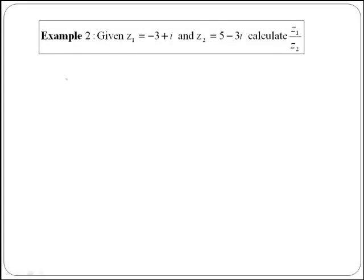Now that we know about the conjugate of a complex number, we are ready to solve the question that we had at the start. Given z1 equals minus 3 plus i and z2 equals 5 minus 3i, calculate z1 over z2. So we have minus 3 plus i over 5 minus 3i.